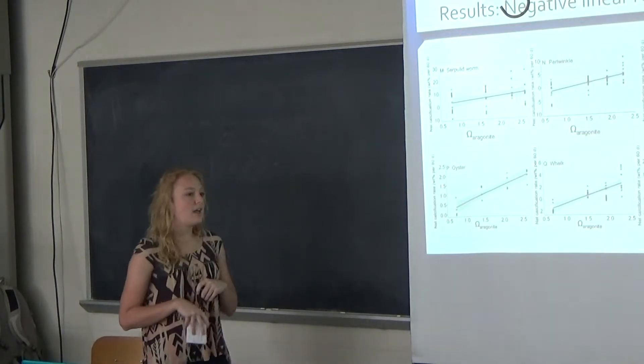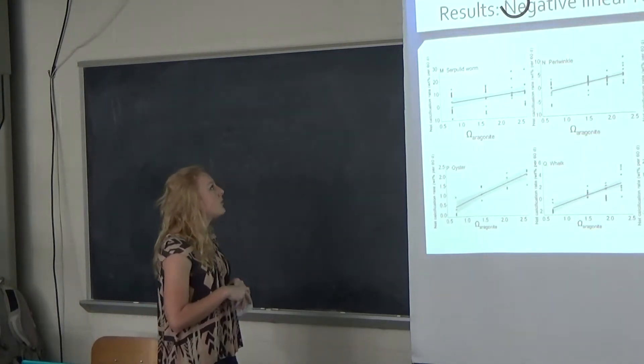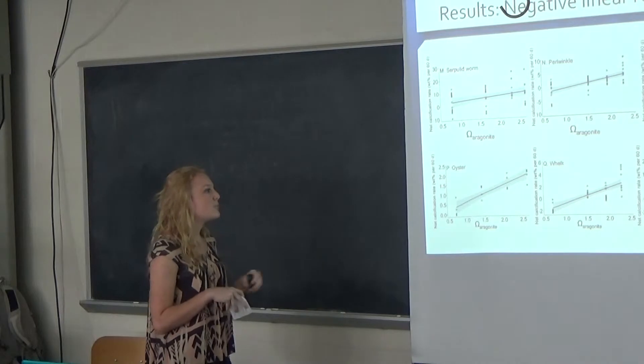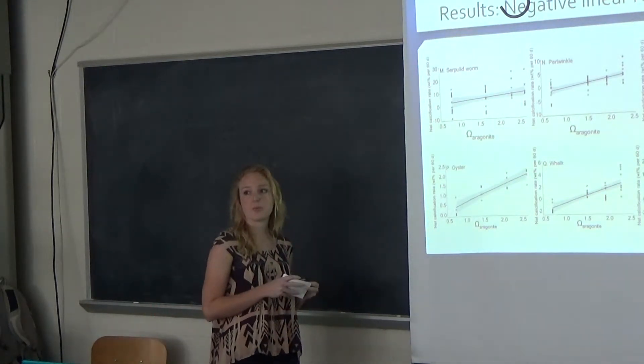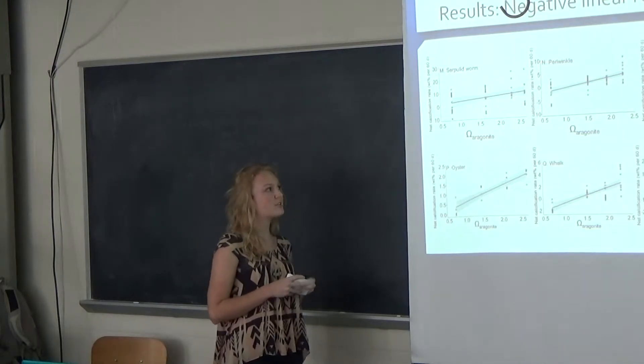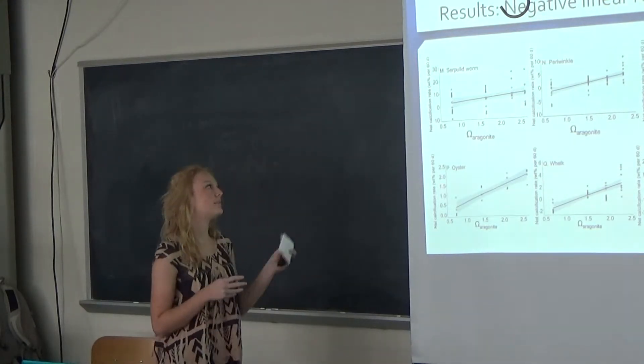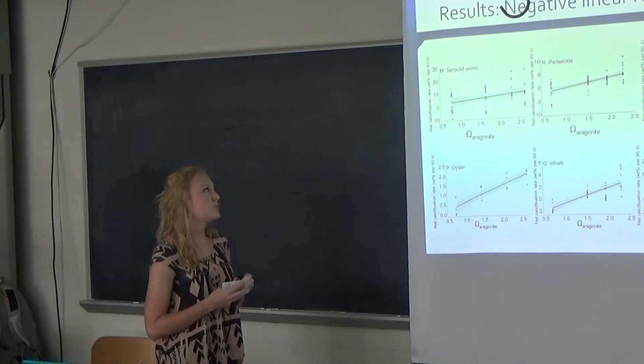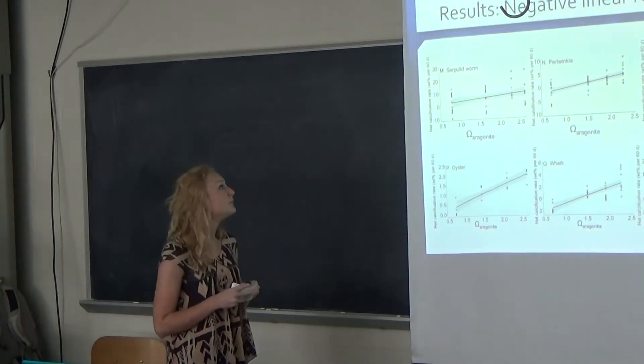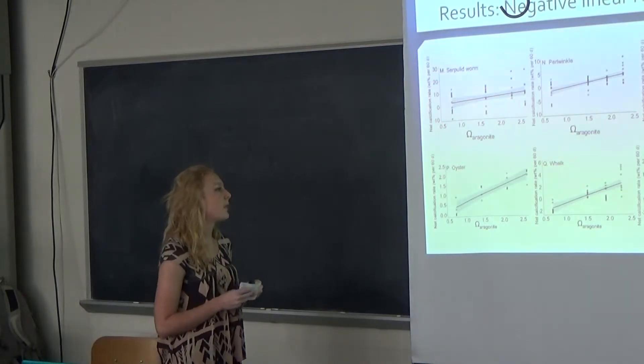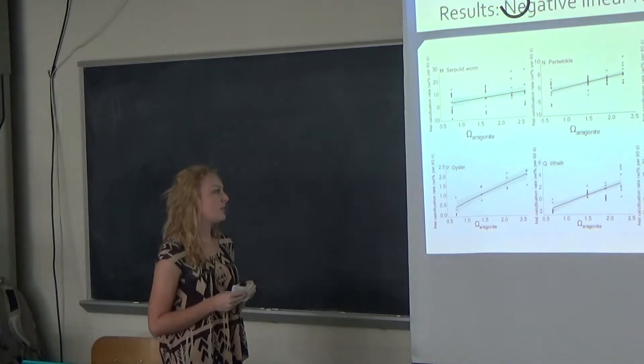Now we're going to look at the results, and we did see a lot of variant results. This is the most common result. Six of the species showed a negative linear response where their net calcification rate decreased compared to the increase of the CO2 levels.